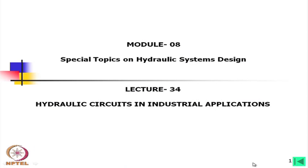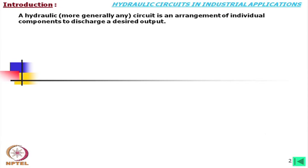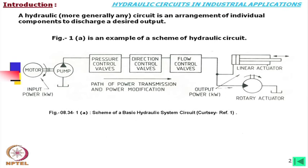Welcome to today's lecture on Hydraulic Circuits in Industrial Applications. A hydraulic circuit — more generally, any circuit — is an arrangement of individual components to discharge a desired output. Like an electrical circuit, we need to draw a hydraulic circuit, mainly in hydrostatic transmission systems. The components are not designed individually; rather, circuits are designed and components are connected by hose or pipes to perform for particular requirements.